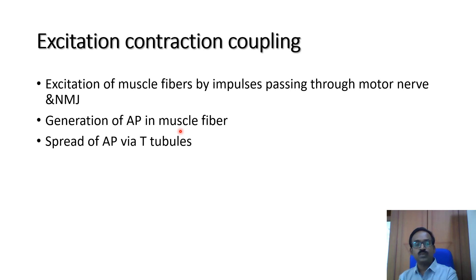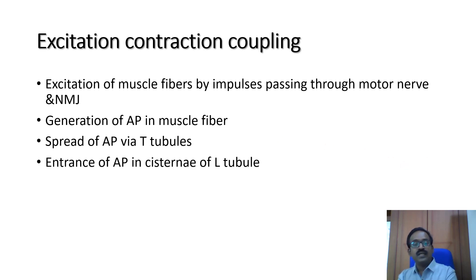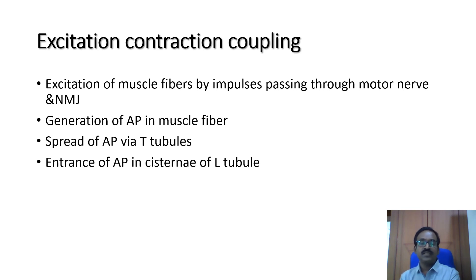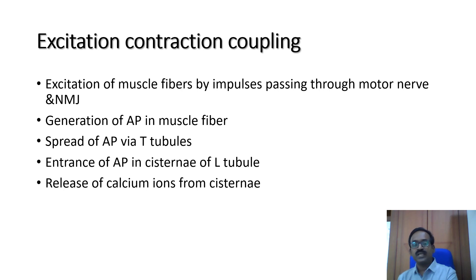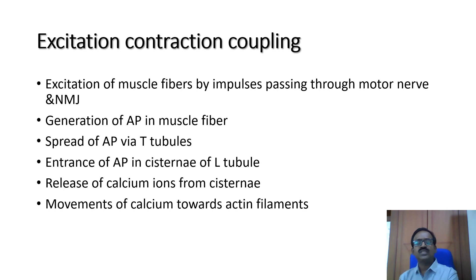The action potential spreads via the T-tubule, which is connected by the dihydropyridine receptor. The action potential then reaches the L-tubule, which releases calcium ions. The calcium moves towards the actin filaments and binds with troponin C.